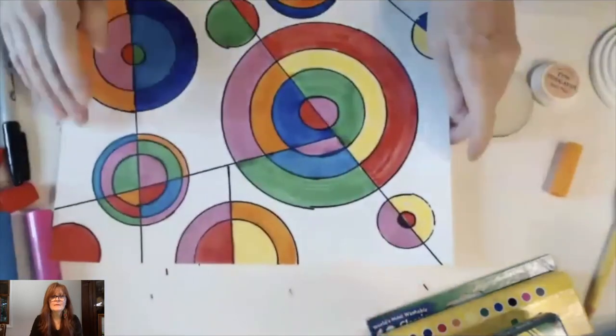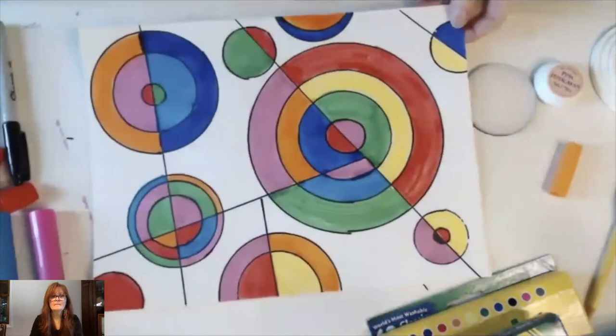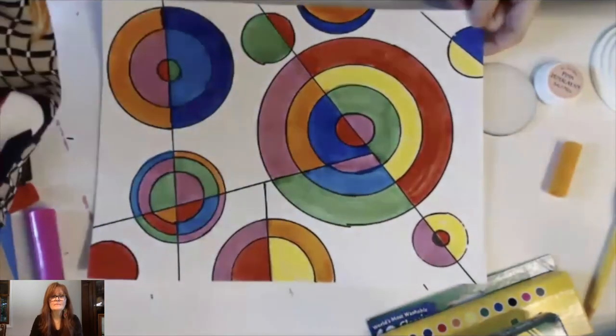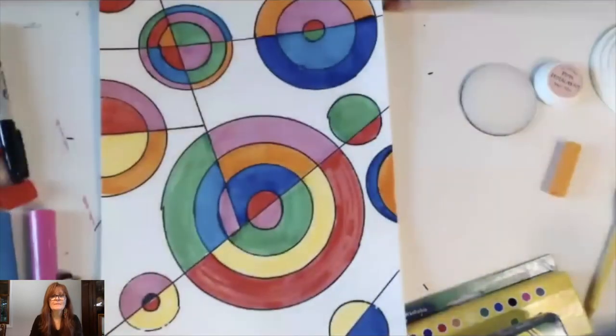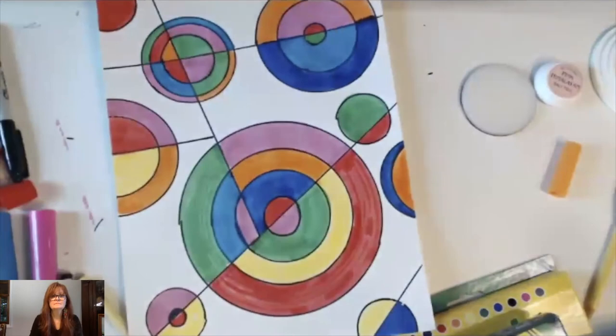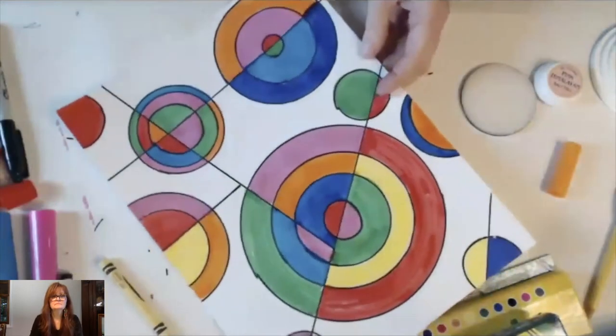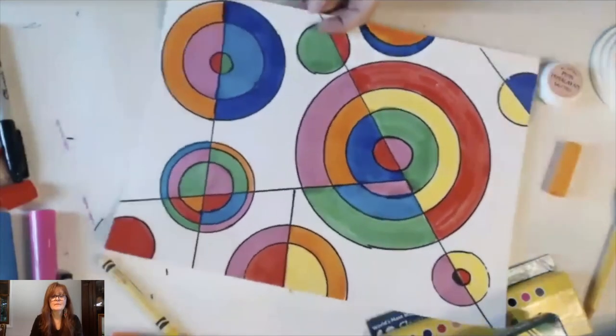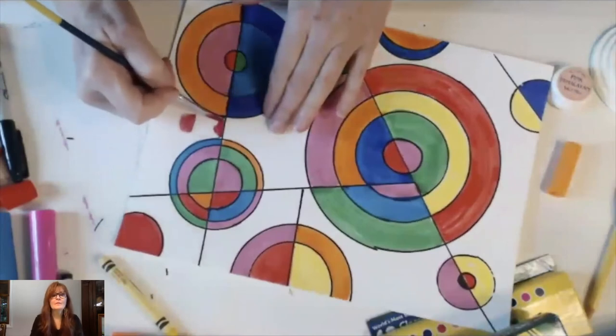So you could continue coloring the background, these sections, all different colors. That's one option with markers. You could come in and do it with crayons so that it would go a little more quickly and you wouldn't use all your markers. And another option is because it's now markers and areas outlined. If you're careful, you could come in and watercolor those areas. So I'm going to leave that up to you and what materials you have at home.